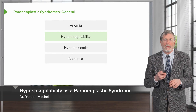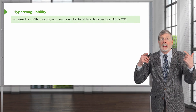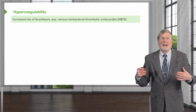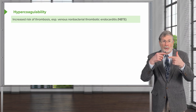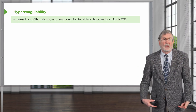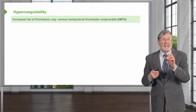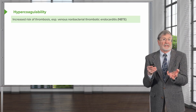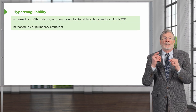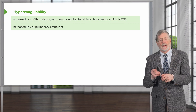Next up, hypercoagulability. This is basically an increased risk of thrombosis because we have activated one aspect of Virchow's triad — we have made the host hypercoagulable, and there are a variety of ways that we can do this. When it happens, you may get deep venous thrombosis with pulmonary embolization, or you can get nonbacterial thrombotic endocarditis — the formation of thrombi on valves that can then embolize and cause injury someplace else. There is an increased risk of both in the setting of a hypercoagulable state driven by malignancy.